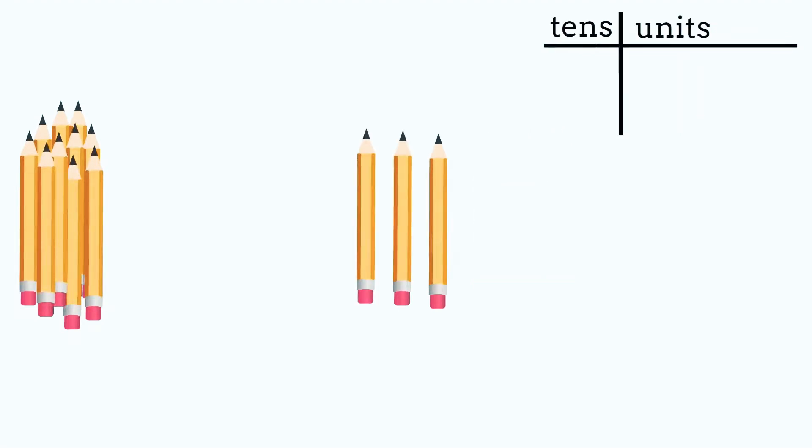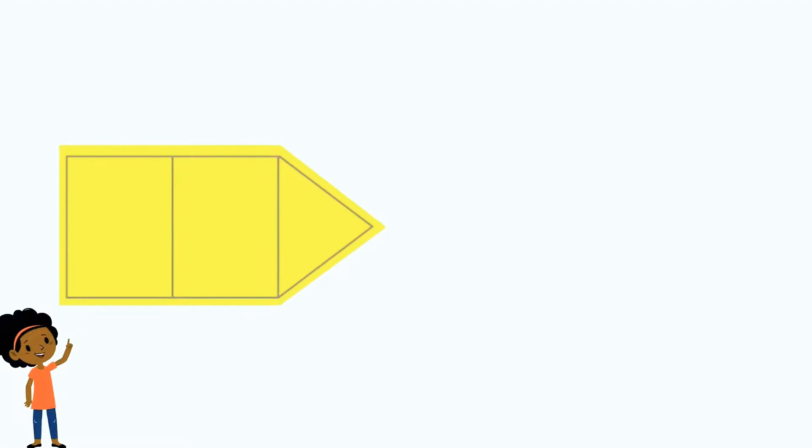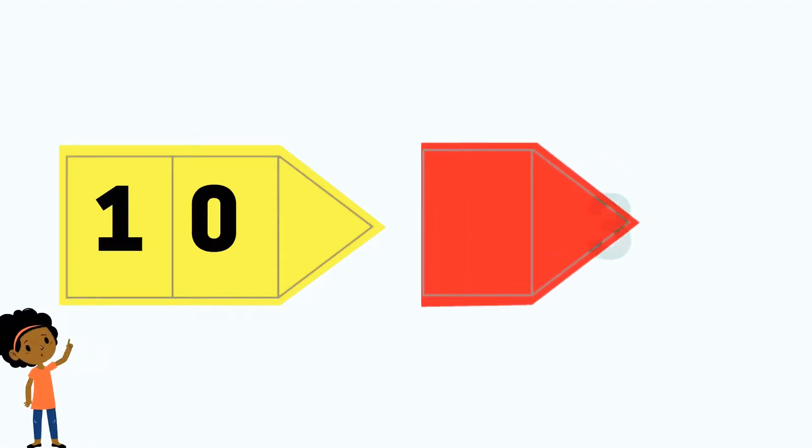We have one group of 10 pencils and 3 units. Units represent ones. It means we're counting in ones. One 10 and 3 units make 13. Let's use arrow cards to represent 13. We will need one 10 and 3 units.